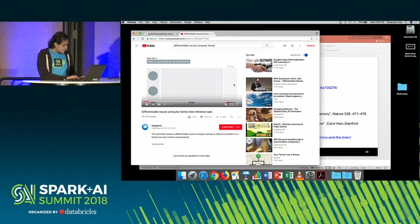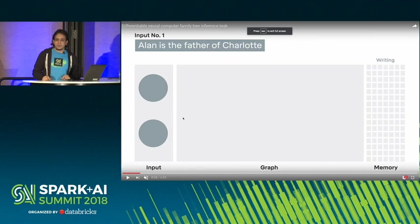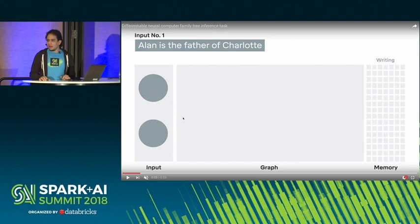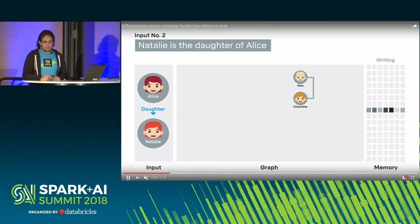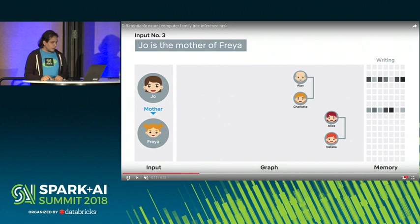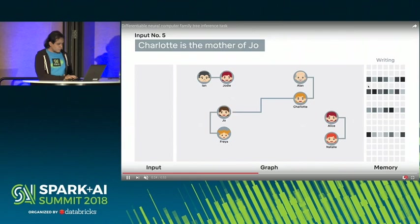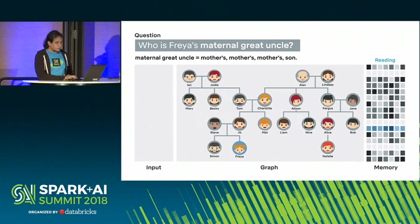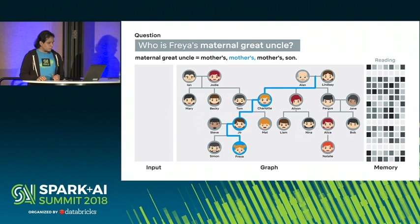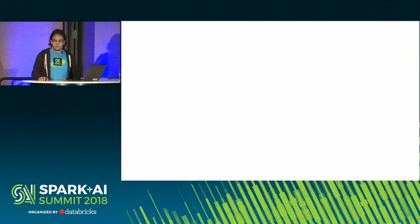Just to finish, here's the animation of the family tree problem. After the system was trained on random graphs, you feed it a family tree graph and then ask questions, and the system answers. You are feeding the graph by defining nodes and edges, and the system writes to memory — deciding in which memory position to store the information without being programmed. Then you ask questions and it returns answers. This requires reasoning and planning. That's the very nice thing about this model.